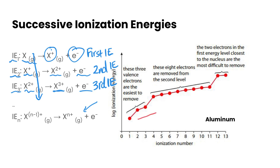The general trend, if we graph the ionization number against its ionization energy, is we would see an increase over those ionization energies.